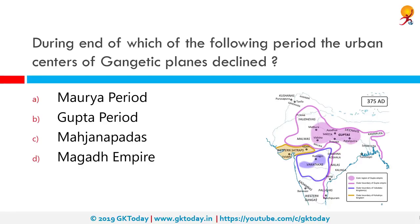During the end of which period did the urban centers of the Gangetic Plains decline? That would be the Gupta period. The Gupta period is generally regarded as the classic peak of North Indian art for all major religious groups, and it is also regarded as the period when the urban centers of the Gangetic Plains declined.